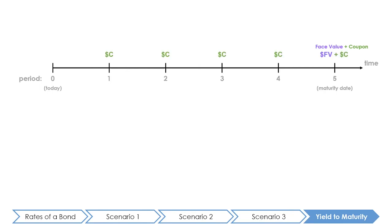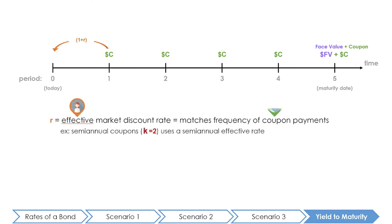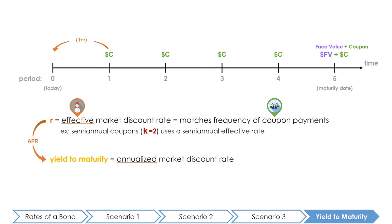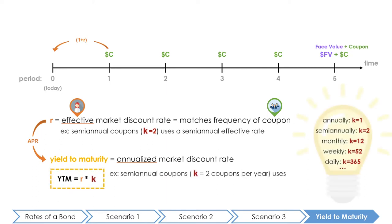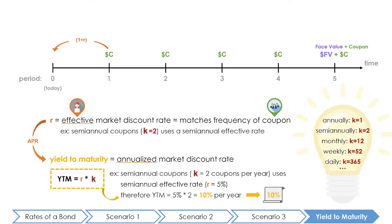In finance, cash flows are discounted using the effective rate, which is the rate that matches the frequency of the cash flows. However, in the finance industry, rates are always quoted in annual terms using APR — and this is also true for bonds. When the effective rates used to discount the coupons of a bond are annualized, this is known as the yield to maturity. The yield to maturity annualizes the effective periodic discount rates. For example, if a bond with semi-annual coupons has an effective semi-annual rate of five percent, then the bond has a yield to maturity of ten percent. Since it is the yield to maturity that gets reported, it is an important concept when talking about bonds.